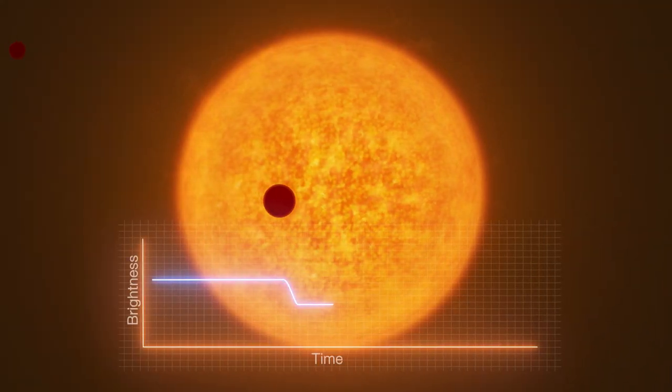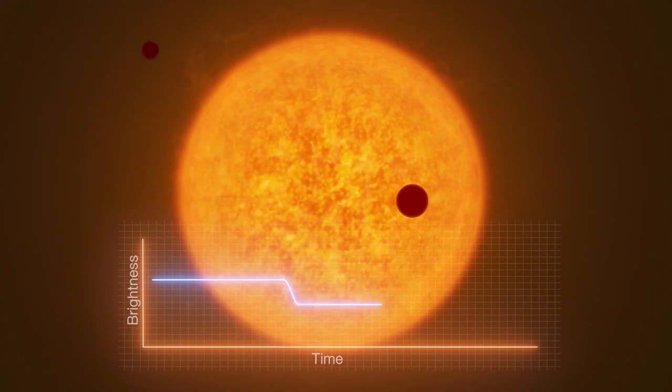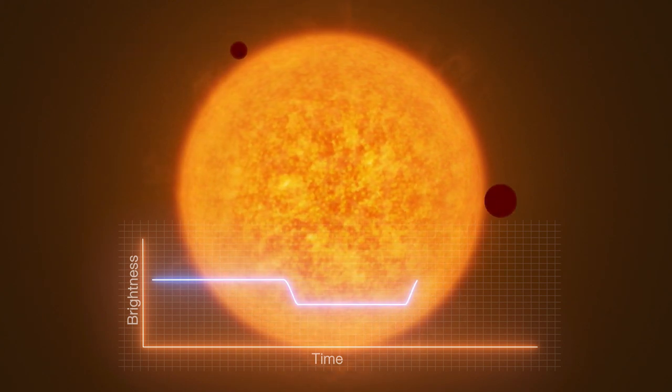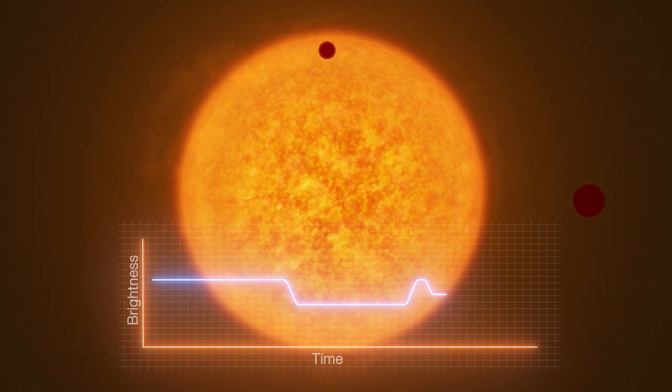Additional smaller dips in light levels, just before or after the transit, can indicate a satellite, an exomoon.